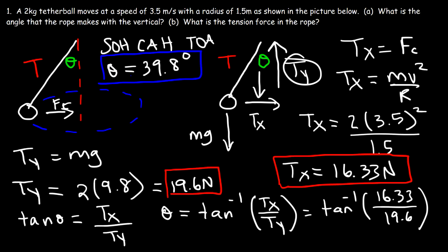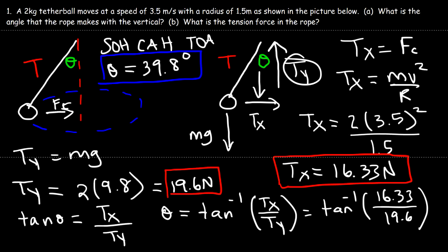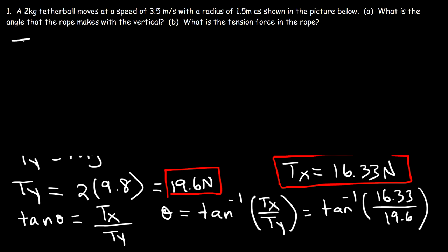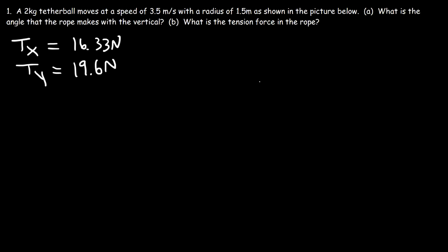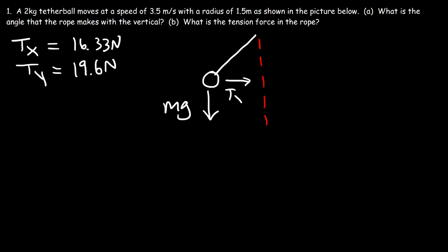Now let's move on to part B. I'll rewrite the values of Tx and Ty and redraw the picture showing mg, the vertical line, Tx, and Ty. Our goal is to calculate the tension force in the rope. Now that we have Tx and Ty, we can use: T squared is equal to Tx squared plus Ty squared.